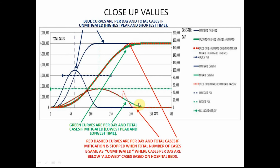Looking at the graph again: here's the unmitigated number of cases per day, and here's the unmitigated total number of cases which levels off when cases per day returns to zero. If you mitigate with the limit we set, that's the green curve, and then the red curve splices at this point. The red curve is a little steeper here because it pops up and ends sooner — in this case by 31 days.